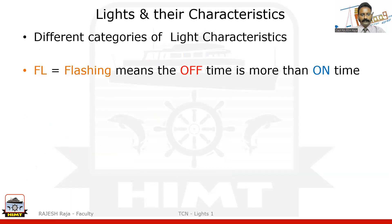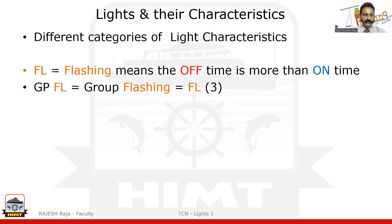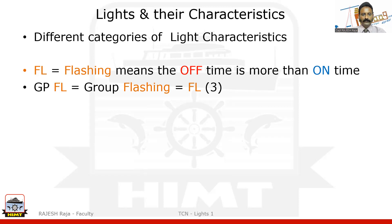The first character is flashing. Flashing is very similar to a torch — it is always off, and you switch it on briefly. The on time is much lesser than the off time. You can have group flashing, for example flashing three — I'll show you a picture of that. You can also have composite group flashing, such as two plus one. Then there is isophase, which means the on and off times are equal.